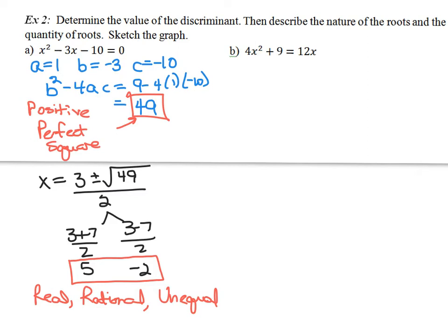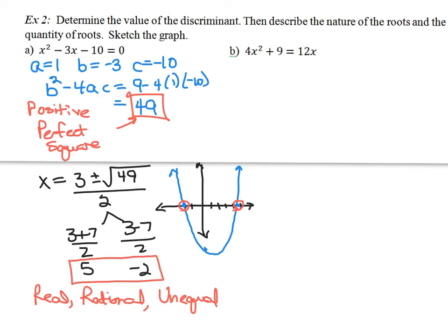Looking at a graph of this one, I have found my roots to be 5 and negative 2, with a y-intercept equal to negative 10. My graph passes through both of those points, going way down to negative 10. I see that I have two distinct roots — two distinct places where the graph crosses the x-axis. That's why I have two roots.